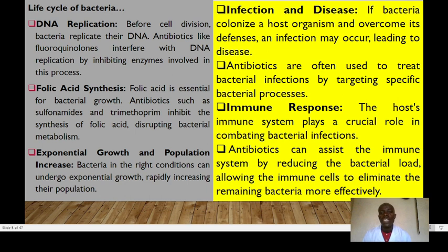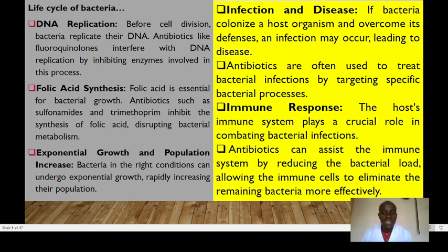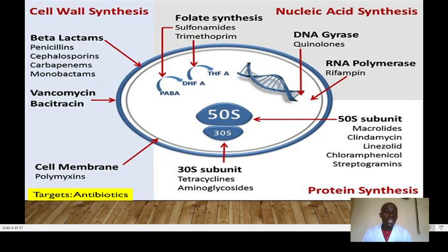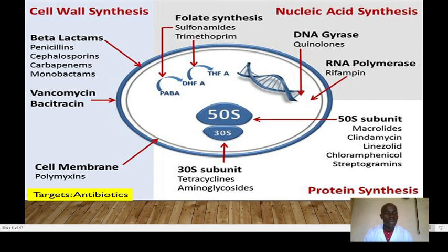Antibiotics are often used to treat bacterial infections by targeting specific bacterial processes. The host immune response plays a crucial role in combating bacterial infection — neutrophils in acute inflammation and macrophages in chronic inflammation. Antibiotics can assist the immune system by reducing the bacterial load, allowing immune cells to eliminate the remaining bacteria more effectively. The cell wall synthesis targets include beta-lactams: penicillins, cephalosporins, carbapenems, and monobactams, as well as vancomycin.